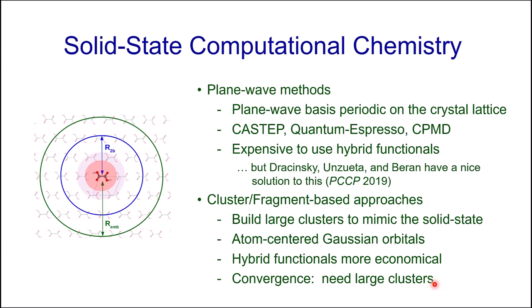For computational chemistry there are two approaches in the literature. The most common is plane-wave based methods that are inherently periodic on the crystal lattice — examples include CASTEP, Quantum ESPRESSO, and CPMD — which are very popular. The drawback is that hybrid functionals are computationally expensive with these approaches, though my colleague Greg Barron has a nice way to solve this. The second approach is cluster fragment-based, using atom-centered Gaussian orbitals, making hybrid functionals much more economical — and hybrid functionals give better chemical shift agreement. The challenge is convergence with respect to system extent, requiring large clusters.